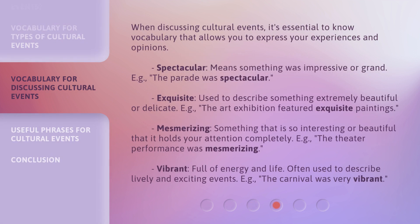When discussing cultural events, it's essential to know vocabulary that allows you to express your experiences and opinions. Spectacular means something was impressive or grand — e.g., the parade was spectacular. Exquisite is used to describe something extremely beautiful or delicate — e.g., the art exhibition featured exquisite paintings. Mesmerizing describes something so interesting or beautiful that it holds your attention completely — e.g., the theater performance was mesmerizing. Vibrant means full of energy and life, often used to describe lively and exciting events — e.g., the carnival was very vibrant.